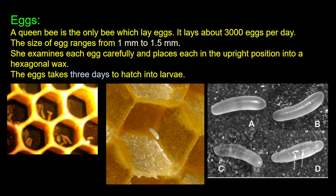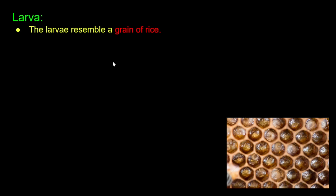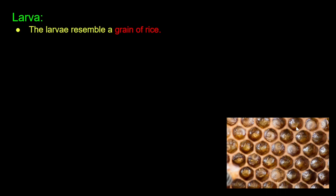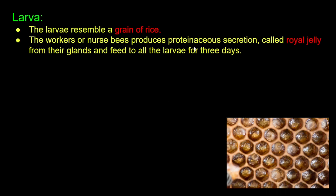The next stage is the larva. The larva resembles a grain of rice. Worker or nurse bees produce a secretion called royal jelly from their glands and feed it to all larvae for the first 3 days.